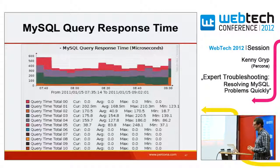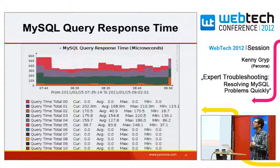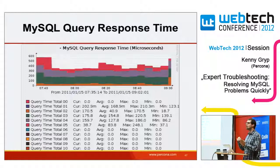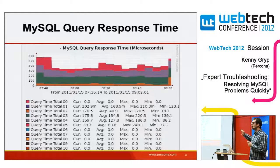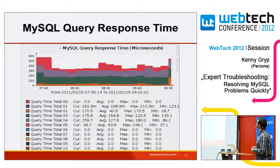Another interesting graph is query response time — a Percona Server feature. It shows how many queries took between various time brackets: 1ms to 10ms, 10ms to 100ms, 100ms to 1s, and so on. Over time you can see if the pattern changed — maybe queries got faster or slower due to increased throughput.